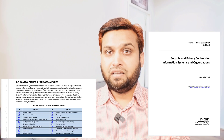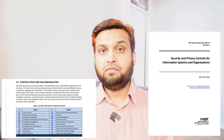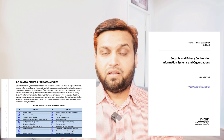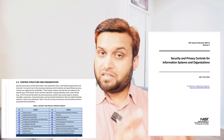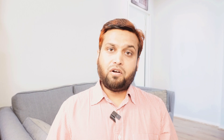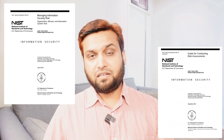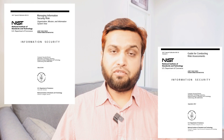NIST 800-53 is a set of security controls a company needs to enforce information security or cyber security for its functioning. Another set of standards relates to risk. When you do enterprise risk management or risk assessment, you also need a standard, and that is put forth by NIST in documents 800-39 and 800-30. There is also a Risk Management Framework, NIST 800-37, for federal organizations.